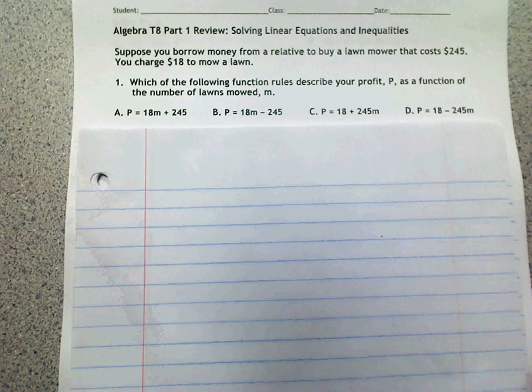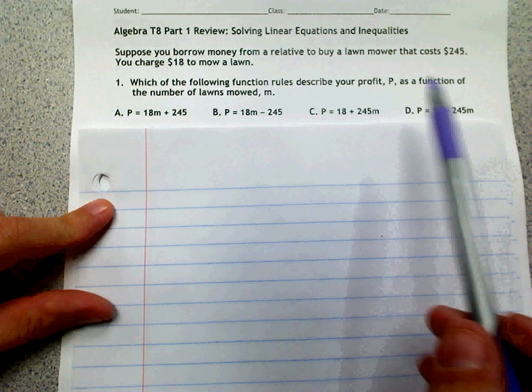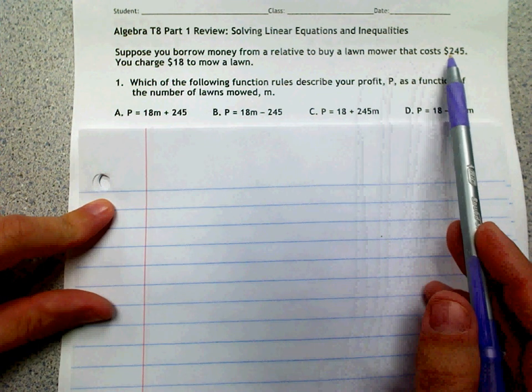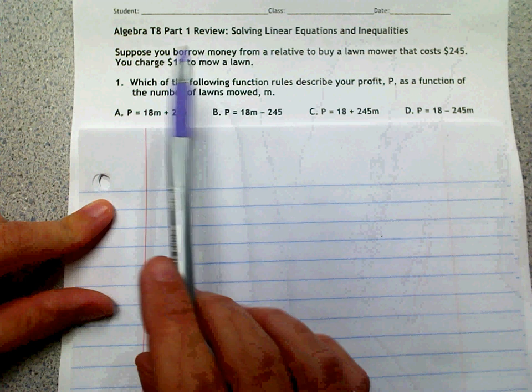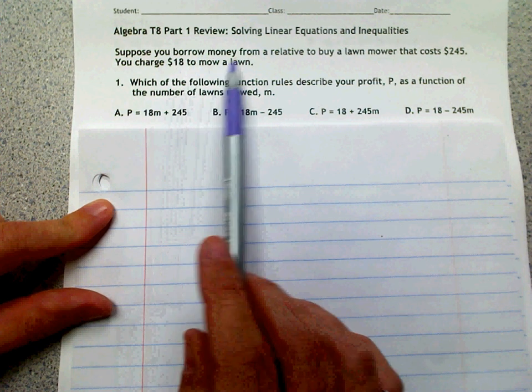Okay, number one. It says, suppose you borrow money from a relative to buy a lawnmower that costs $245. You charge $18 to mow a lawn.